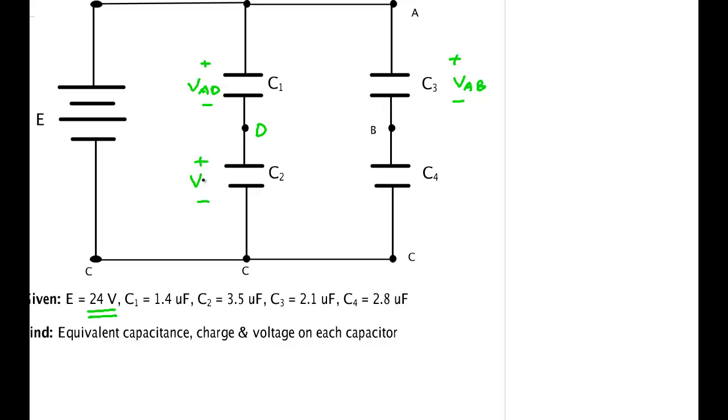Likewise, C2 and C4 are not parallel either. C2 has voltage V_DC and C4 has voltage V_BC. C1 is in series with C2, and C3 is in series with C4. There is some charge Q2 going this way and some charge Q1 going along this part of the circuit.